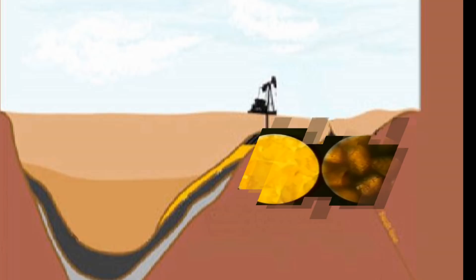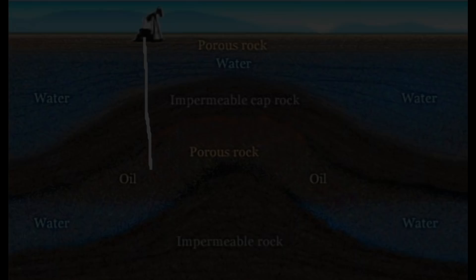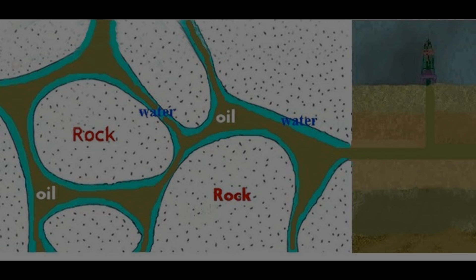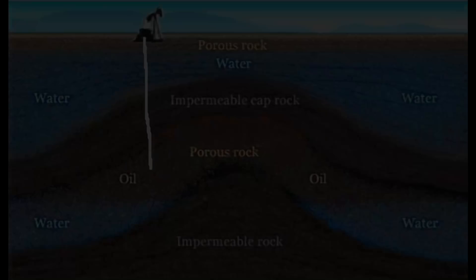Let's take a few minutes to review what was said in Chapter 2. There, I showed you a hypothetical well and asked if, after drilling a well, whether only water would flow or whether both oil and water would flow. At that time, I explained that for oil to flow, it has to make up at least 25% of the fluid. Otherwise, only water would flow. This exact percentage where oil will flow is known as critical saturation.